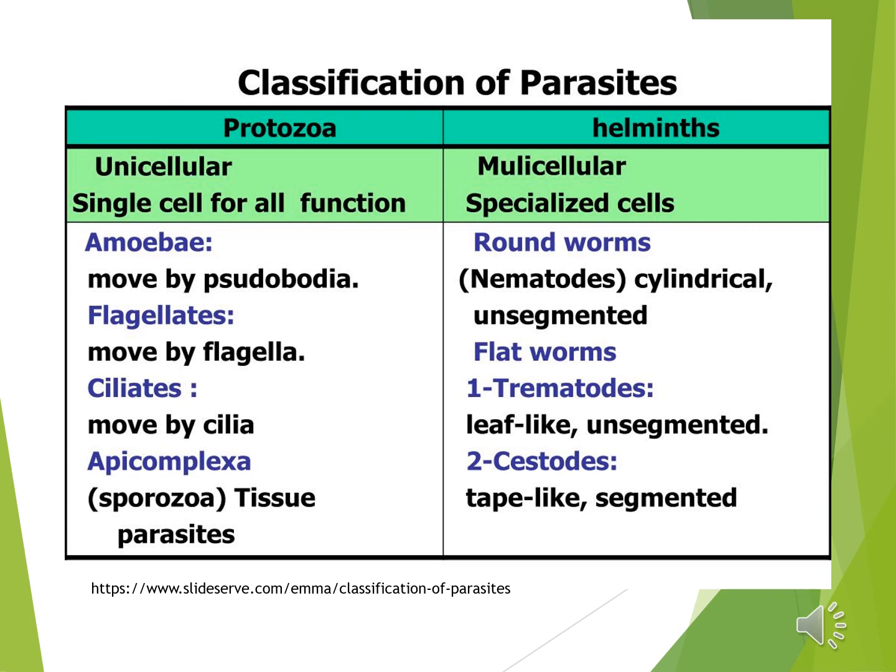Under protozoa, these are unicellular or single-celled organisms, sometimes classified according to their mode of movement. Amoeba move by pseudopodia. Flagellates move by flagella. Ciliates move by cilia. The Apicomplexa or Sporozoa sometimes have gliding movements inside the tissues and appear as gliding unicellular organisms.